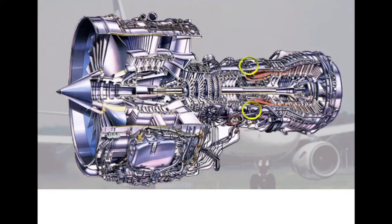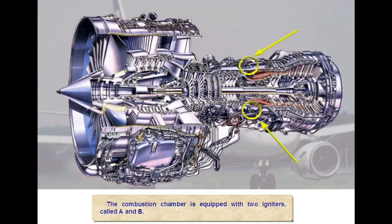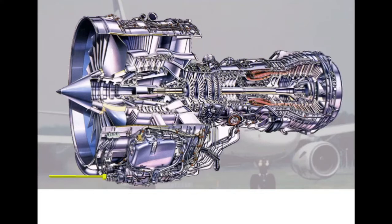The combustion chamber is equipped with two igniters, called A and B. The accessory gearbox is located at the bottom of the fan case and is driven by the high-pressure rotor.